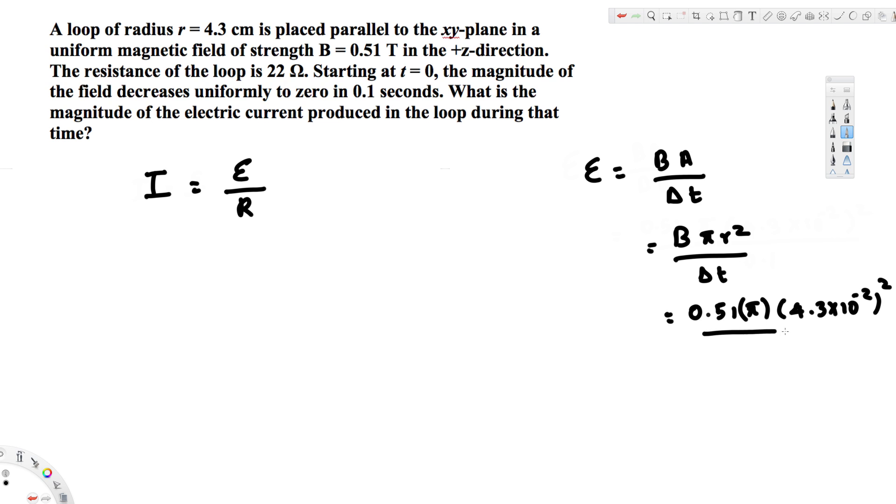divided by Δt = 0.1 seconds. Calculating this gives 2.968 × 10⁻² volts. Now we have both the emf and the resistance